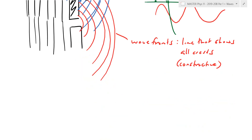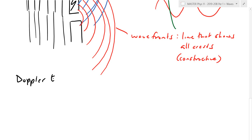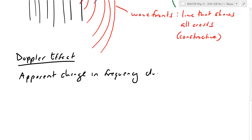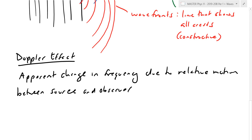One phenomenon I didn't quite get to yesterday is the Doppler effect, or Doppler shift. The Doppler effect is the apparent change in frequency due to relative motion between the source — the thing generating the wave — and the observer. You notice this any time an ambulance whizzes by: you hear that change in frequency, a change in tonality. As the ambulance heads toward you, it's chasing its waves, so the frequency shifts to a higher value.